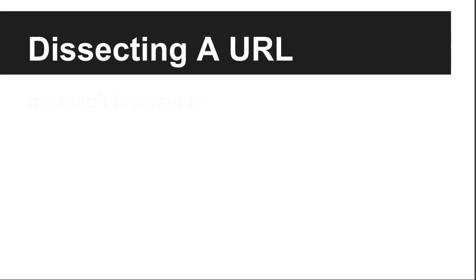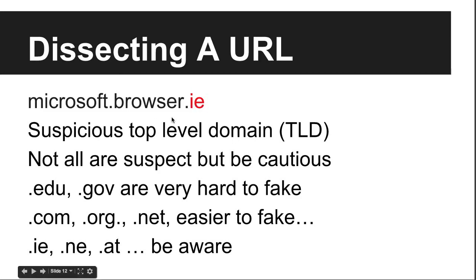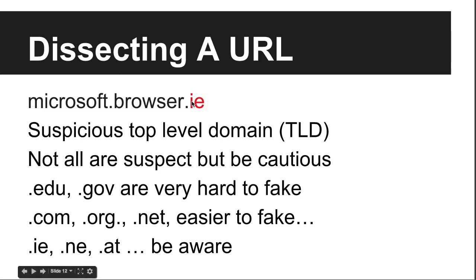Let's dissect URLs. In microsoft.browser.ie, the .ie is a suspicious top-level domain or TLD. Top-level domains — like .com, .edu, .gov — are as high up as you can go, like the C drive on your computer's file system. The domain name is a particular location within that TLD. .edu and .gov are very hard to fake — you need to go through rigorous criteria to obtain them. .com, .org, and .net are easy to get.